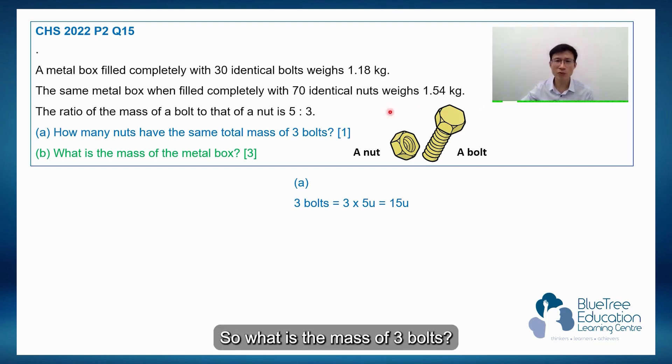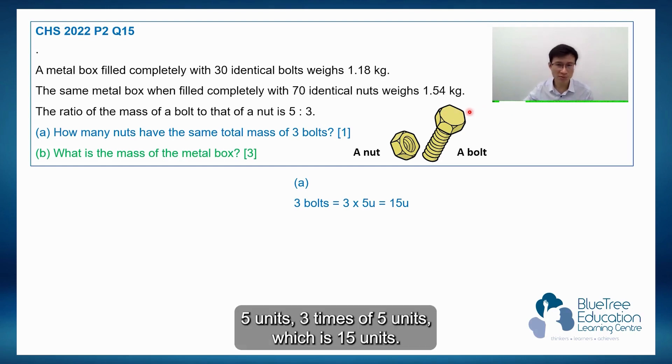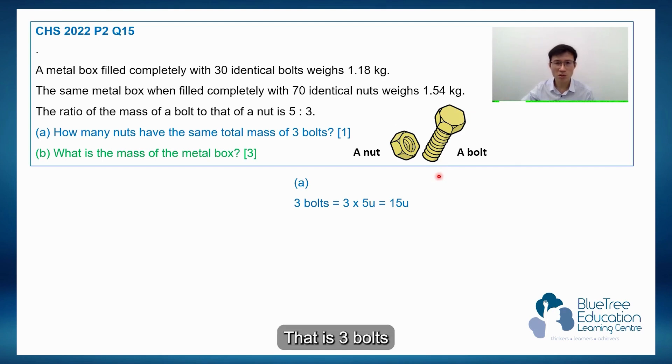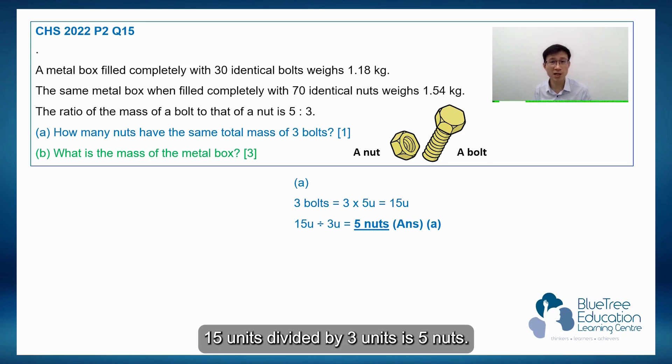So what is the mass of 3 bolts? So each bolt is 5 units. So 3 bolts is 3 times 5 units, which is 15 units. That is 3 bolts.